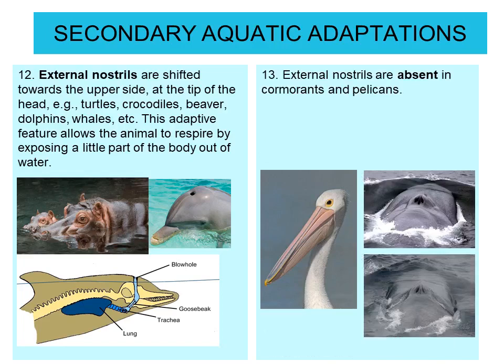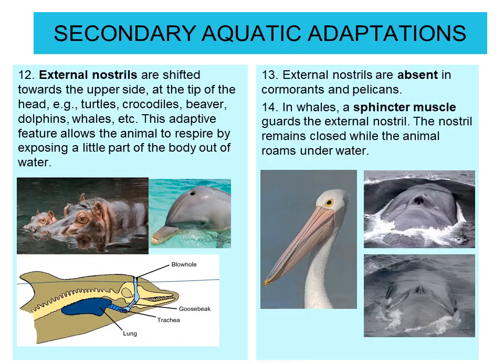Sometimes the external nostrils are completely absent — for example, in cormorants and pelicans. In whales, sphincter muscles guard the external nostril; the nostril remains closed while the animal roams underwater.